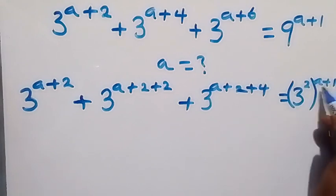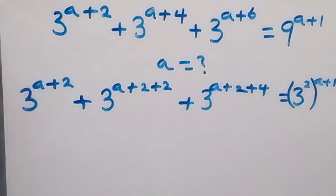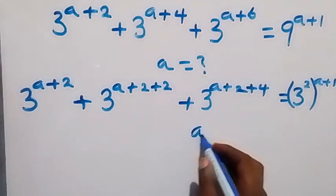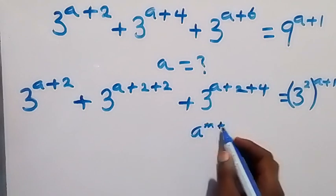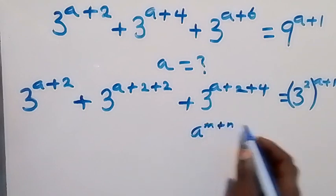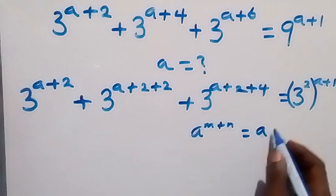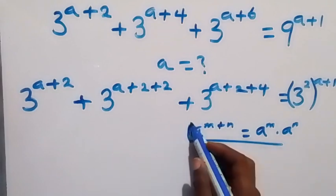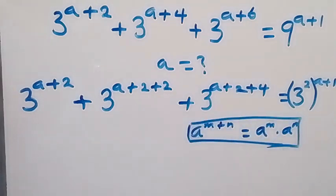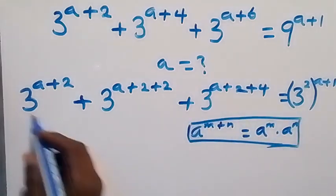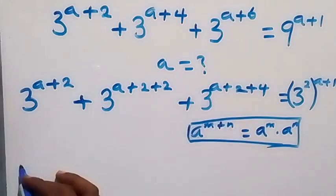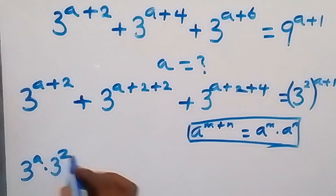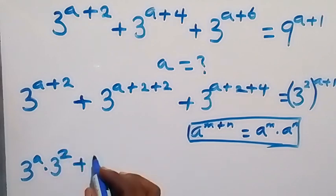Now this power will multiply. From here, when we have a raised to power m plus n — from the law of indices this is the same thing as a raised to power m times a raised to power n. So when we make use of this here, then we can write this equation, and this will be 3 raised to power a times 3 raised to power 2.